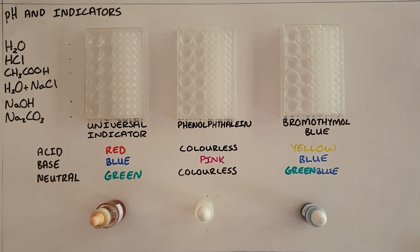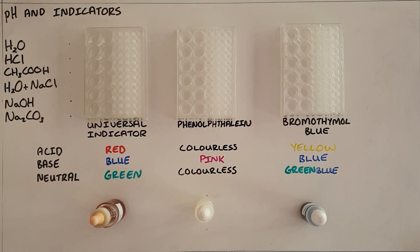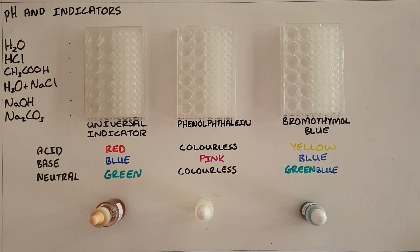We know that the pH scale is used to give an accurate measurement of how acidic or basic a substance is, but we can also use indicators to give us some indication of whether a substance is an acid or a base. So we are going to be demonstrating three indicators today.